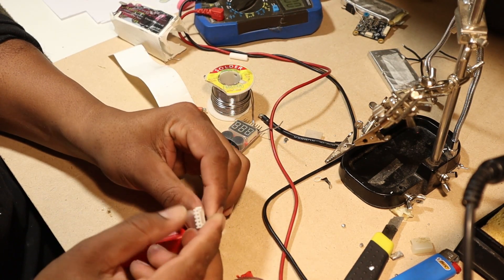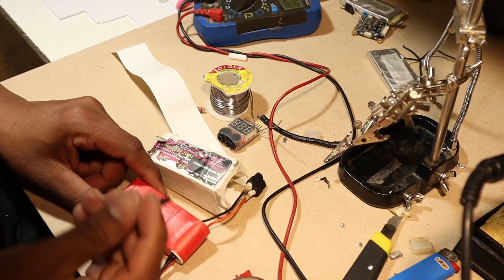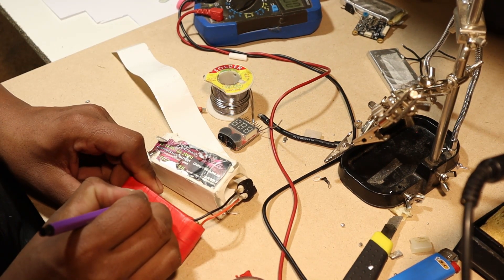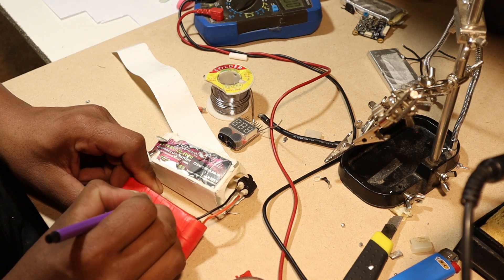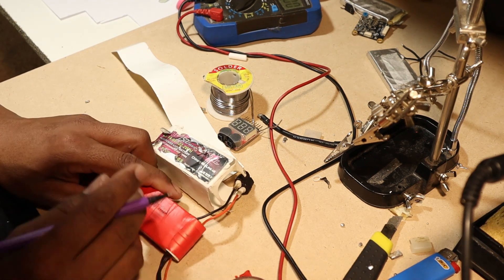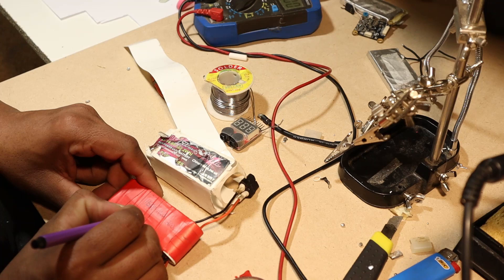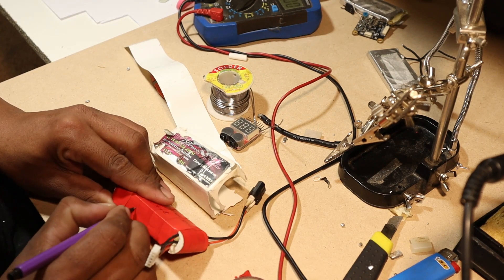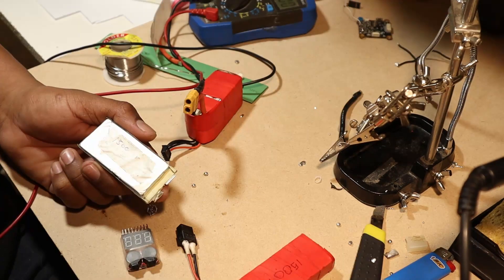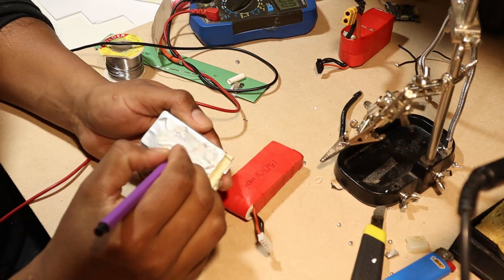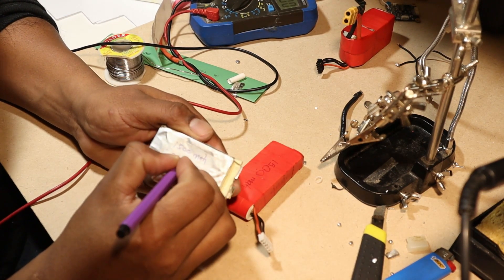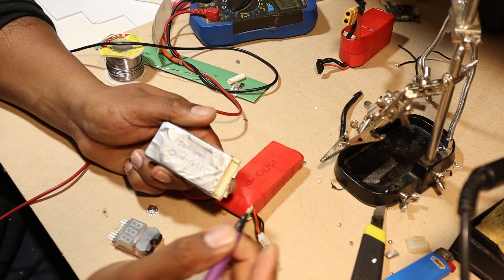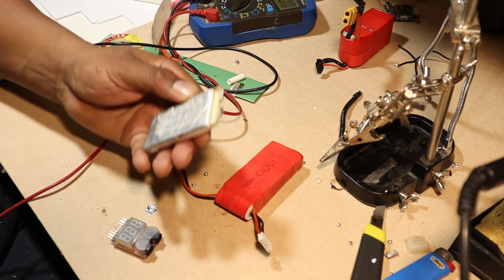One of the most important steps is to write all the specs from the original label because these specs are very important for putting your lipo on charging. It's very dangerous to charge a lipo with the wrong current or wrong voltage, so make sure you have all the specs. This is one of the extra cells. Maybe someday I'm going to need it, so I'm going to write specs on this one as well.